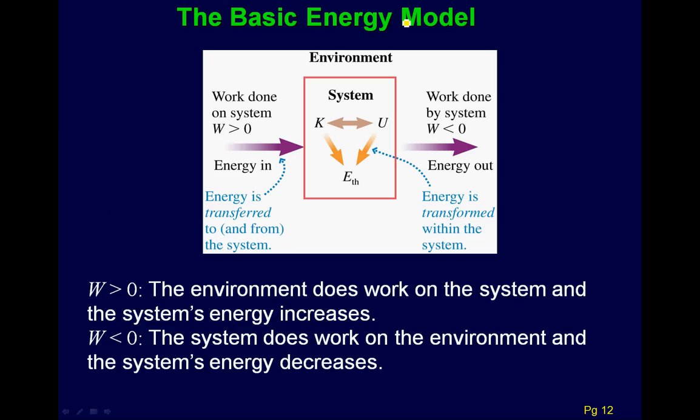Now we move on to Chapter 11 and the basic energy model. Knight describes this as the system and the environment. Inside the system, you can convert between kinetic, potential, and thermal energies. Work is one of the ways the environment and the system transfer energy: if work is greater than zero, the environment does work on the system; if less than zero, the system does work on the environment.